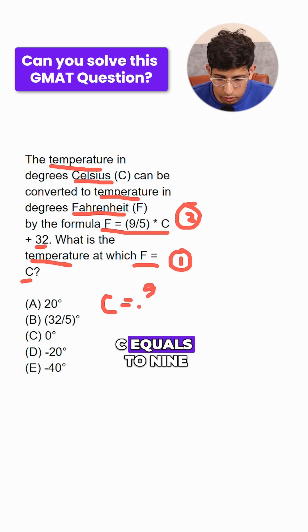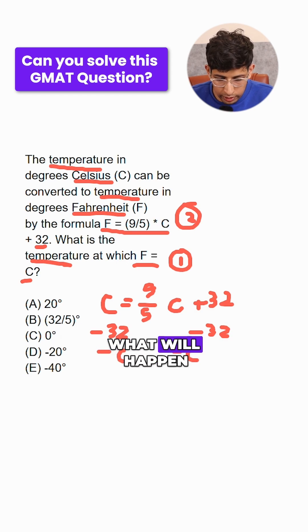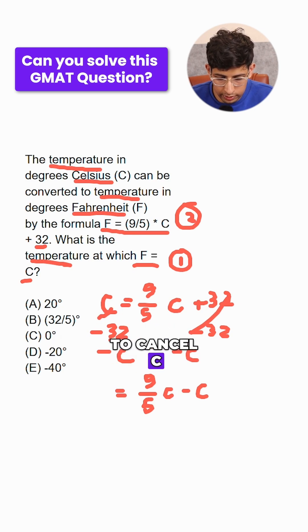So what will it become? C equals 9 by 5 C plus 32. Minus 32 both sides and minus C both sides. What will happen is 9 by 5 C minus C equals 32. 32 cancel, C cancel, right, equals to minus 32.